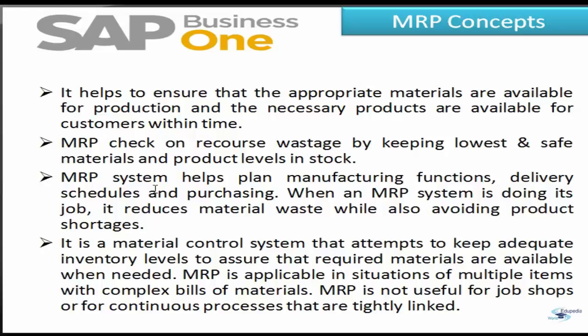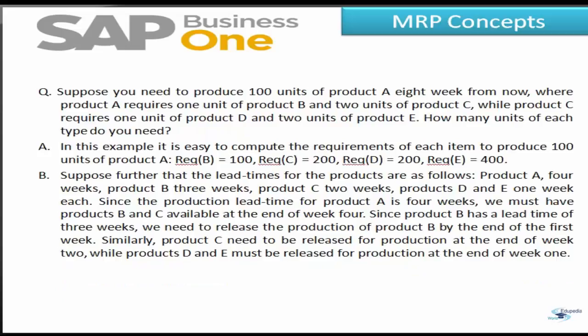When an MRP system is doing its job, it reduces material waste while also avoiding product shortages. Data integrity, however, is a major issue for successful material requirement planning — the data fed into the system must be accurate, otherwise serial production errors may occur. Finally, it is a material control system that attempts to keep adequate inventory levels to assure that the required materials are available when needed. MRP is applicable in situations of multiple items with complex bills of materials.